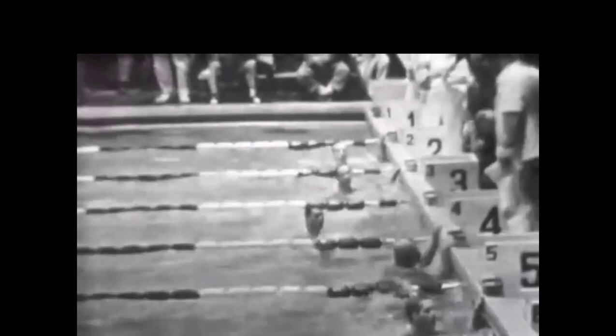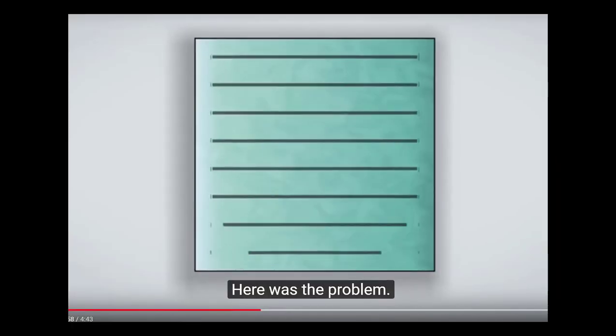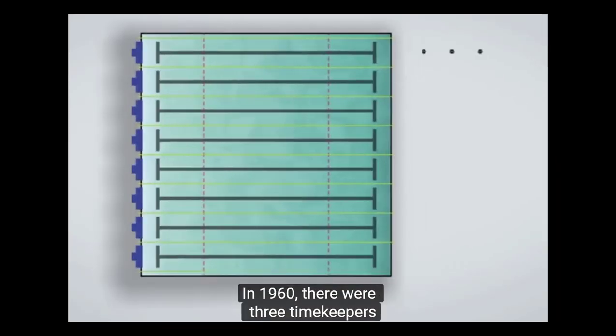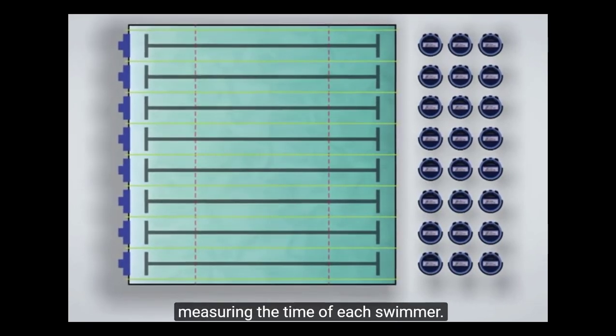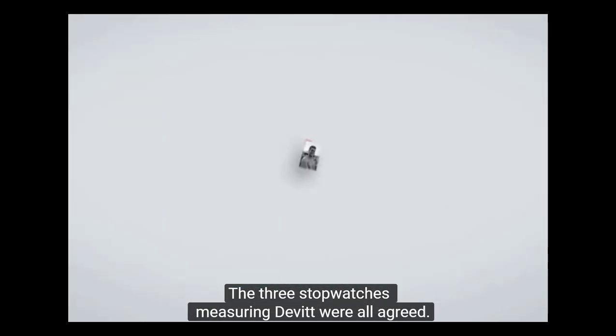I don't know if you caught the commentator saying nobody can tell who won there, nor could the judges. Here was the problem. In 1960 there were three timekeepers at the end of each lane, measuring the time with a stopwatch for each swimmer.